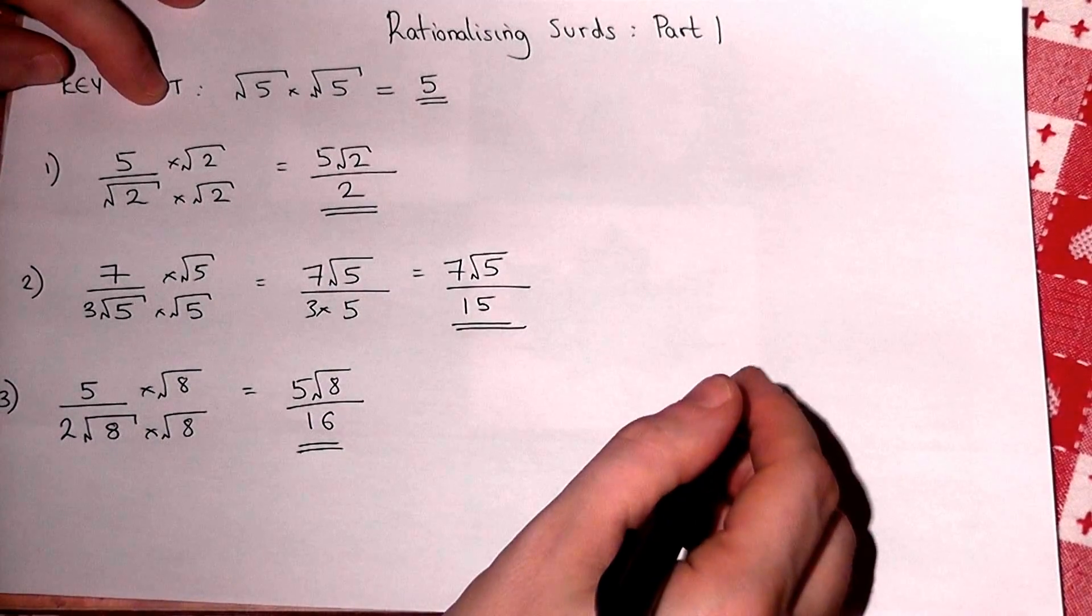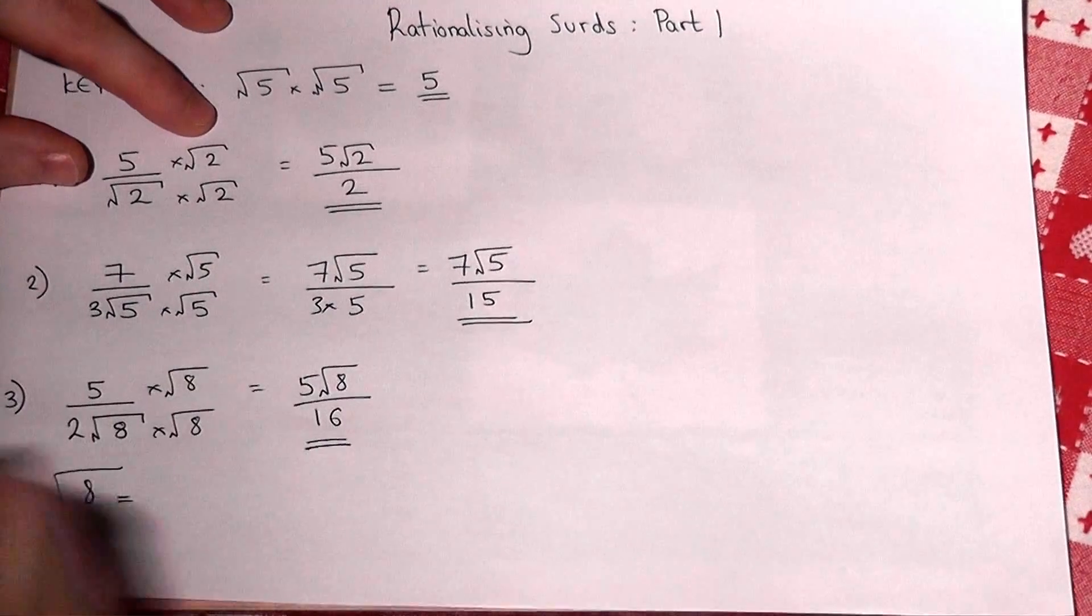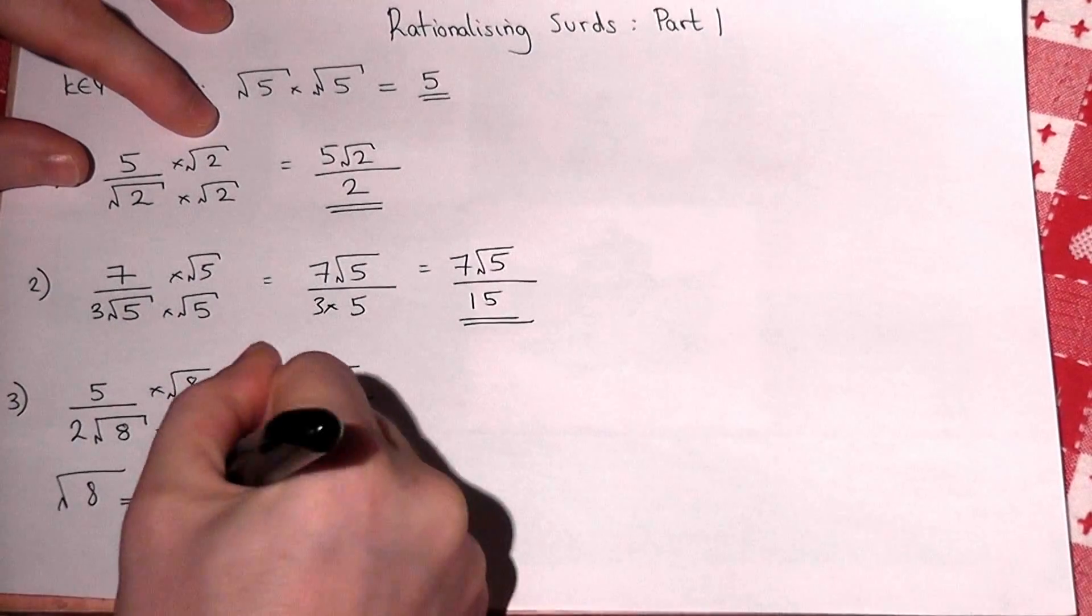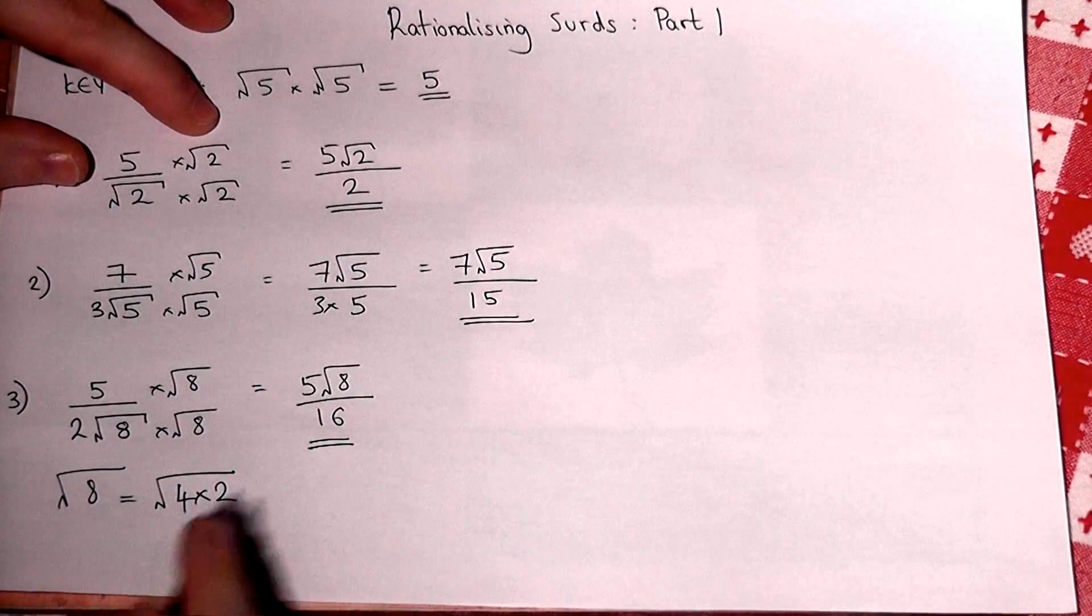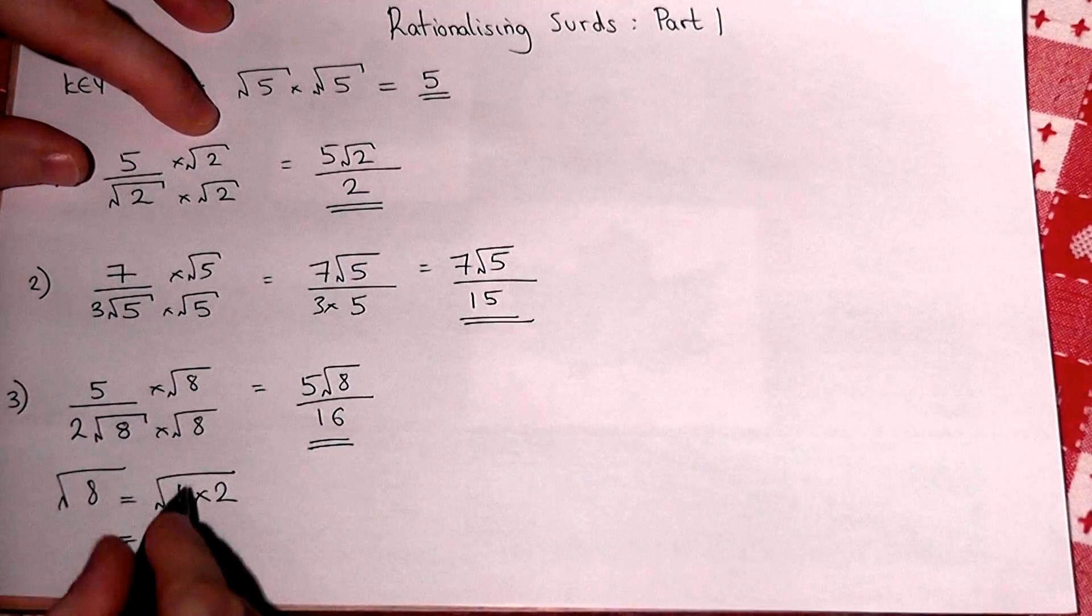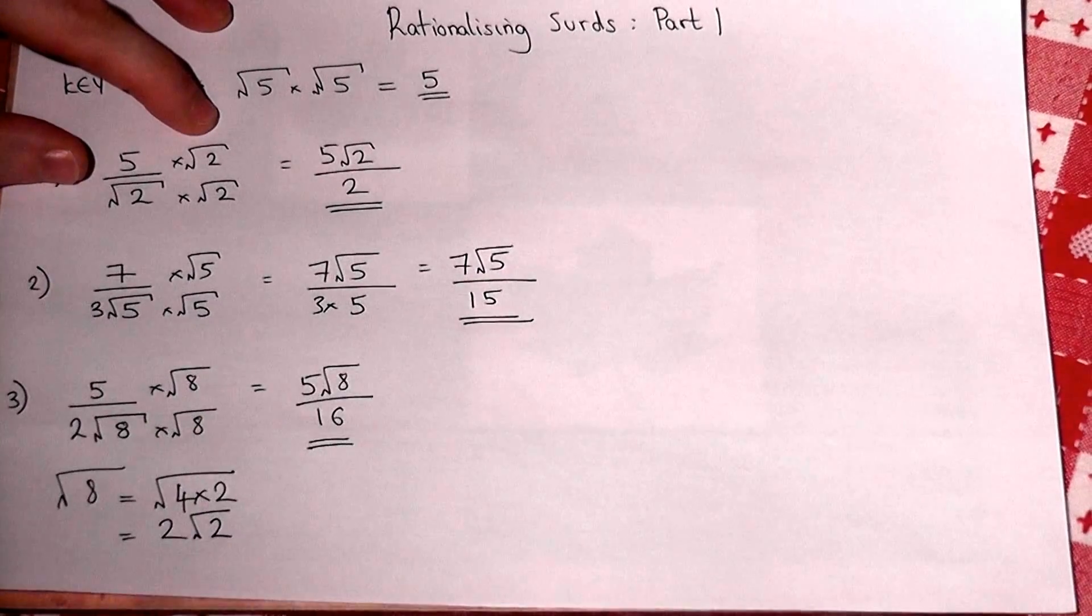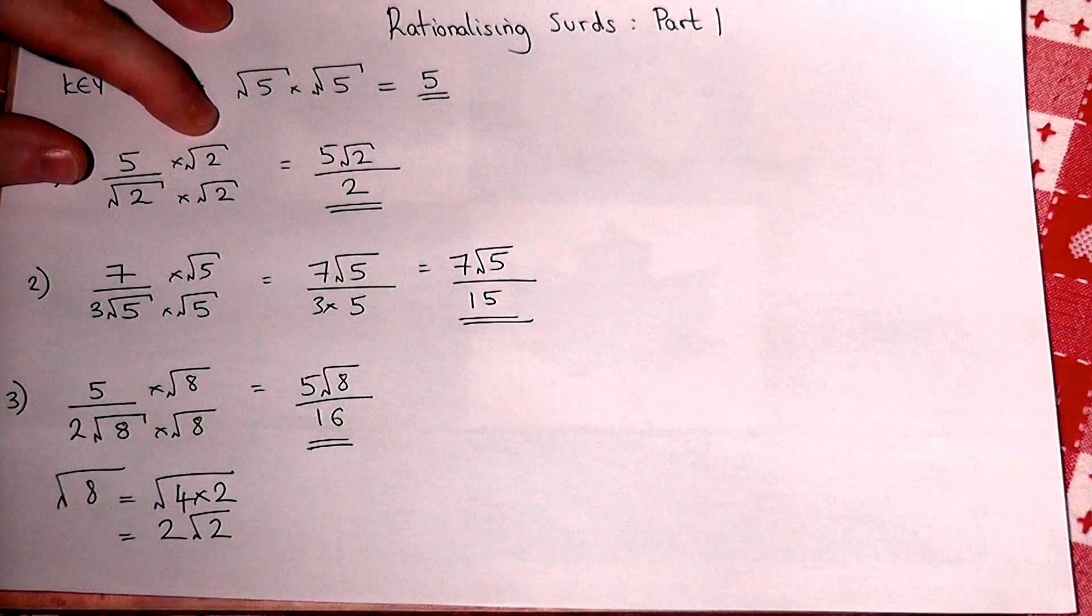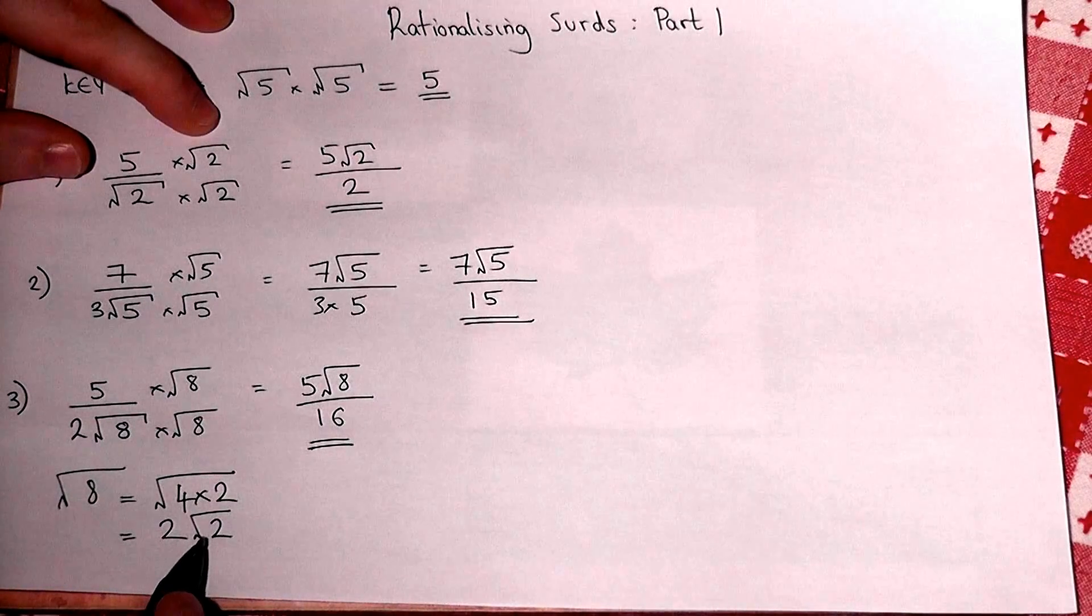√8 can be simplified. Now √8 is the same as √(4 × 2), where 4 is a square number. So this is the same as √4 is 2, so it's 2√2. If you're unsure of this, then see my separate video on simplifying surds.